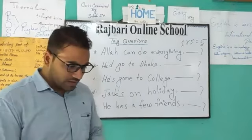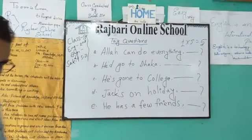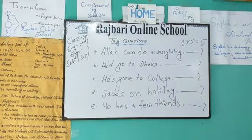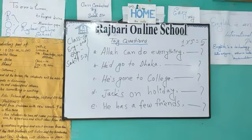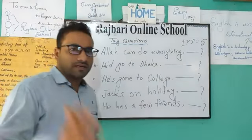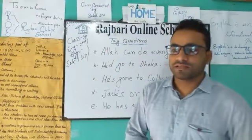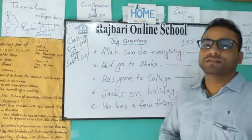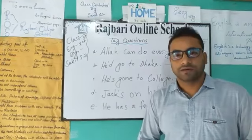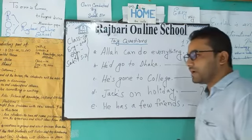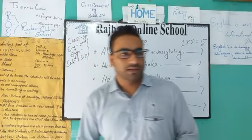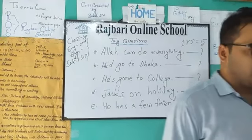I have written five sentences regarding Tag Questions. In my first question, sentence A, 'Allah can do everything.' At first, you have to find out that during making a Tag Question, your first and foremost duty is to find what is the subject and auxiliary verb or principal verb. And if you find negative adverbs in the sentence — for example, hardly, never, seldom — then you should consider the Tag Question as a positive one.